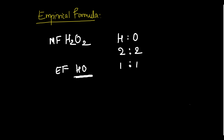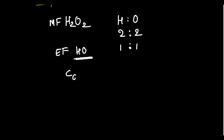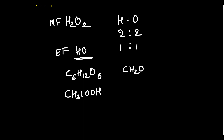What is the empirical formula of C₆H₁₂O₆? Find the simplest ratio among C, H, O — the empirical formula is CH₂O. For acetic acid CH₃COOH, combine all the same atoms: 2 carbons, 4 hydrogens, 2 oxygens → C₂H₄O₂. Simplest ratio gives CH₂O. So the empirical formula of acetic acid is also CH₂O.